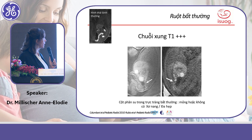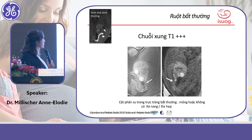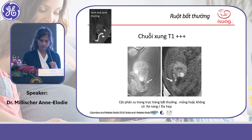On MRI you can also confirm where the uninvolved normal bowel segment is located, distal to the obstruction. The T1 sequence is useful because if you don't see the rectum clearly, you may suspect cystic fibrosis or multiple atresias. The colon may show multiple small stenotic areas, commonly seen in cystic fibrosis.